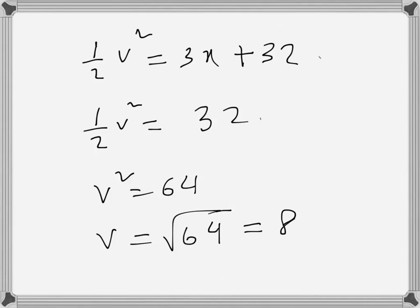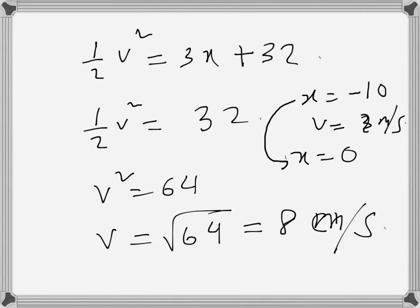We take positive velocity because when x = -10, velocity was 2 m/s, and when x = 0 the particle is going to the right, so the velocity will be positive. Therefore we should take the positive value, v = 8 m/s.